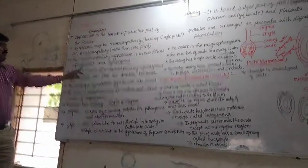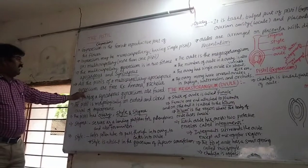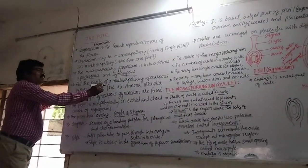Apocarpus means the multicarpillary gynesium, the carpels are free. That is apocarpus.